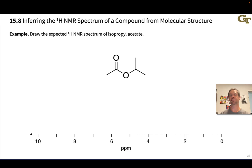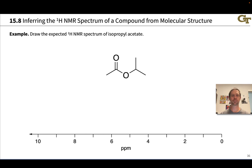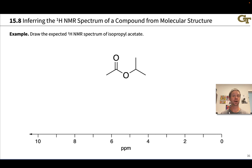Now that we have a good understanding of the fundamental physics underlying proton NMR, we can start applying this method — going from a molecular structure to an educated guess of the shape of the NMR spectrum, and, more interestingly, going from a proton NMR spectrum we've measured to an educated guess of the molecular structure. Unlike infrared and mass spec, we can get very detailed information about connectivity from a proton NMR spectrum alone in many cases.